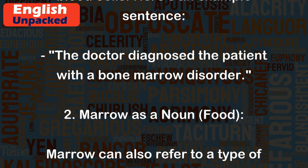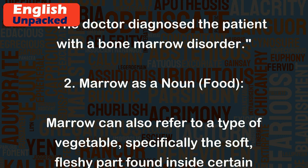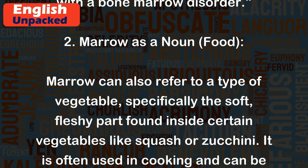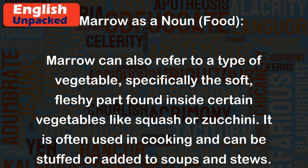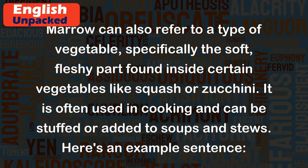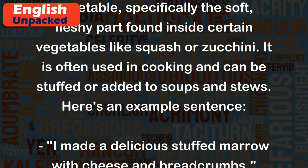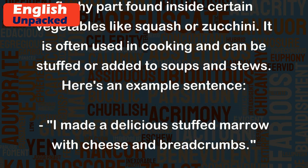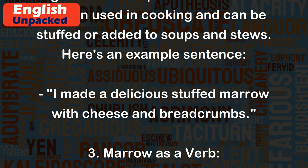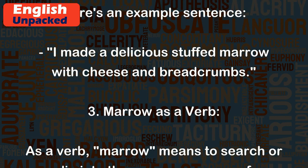2. Marrow as a noun — food. Marrow can also refer to a type of vegetable, specifically the soft, fleshy part found inside certain vegetables like squash or zucchini. It is often used in cooking and can be stuffed or added to soups and stews. Example sentence: I made a delicious stuffed marrow with cheese and breadcrumbs.